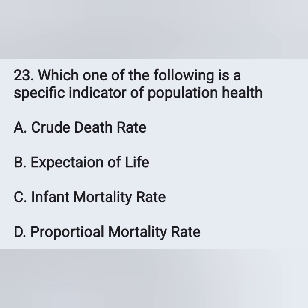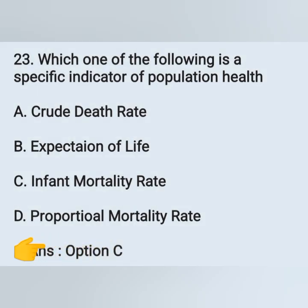Question number 23: which one of the following is a specific indicator of population health — option A: crude death rate, option B: expectation of life, option C: infant mortality rate, option D: proportional mortality rate. The specific indicator of population health is infant mortality rate — option C is the correct answer.